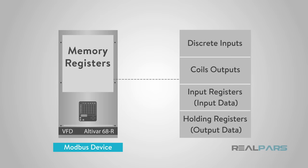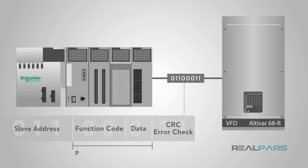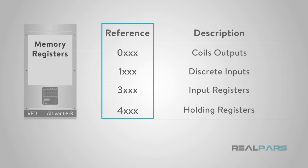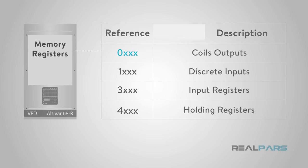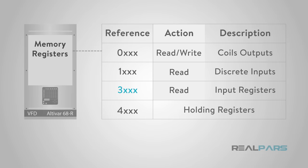The Modbus data model has a simple structure described in four basic data types: discrete inputs, coil outputs, input registers or input data, and holding registers or output data. The Modbus memory registers of a device are organized around these four basic data reference types, further identified by the leading number used in the device's memory address — such as a 0-based register for discrete outputs or coils, a 1-based register for discrete inputs, a 3-based register for input registers, and a 4-based register for holding registers.